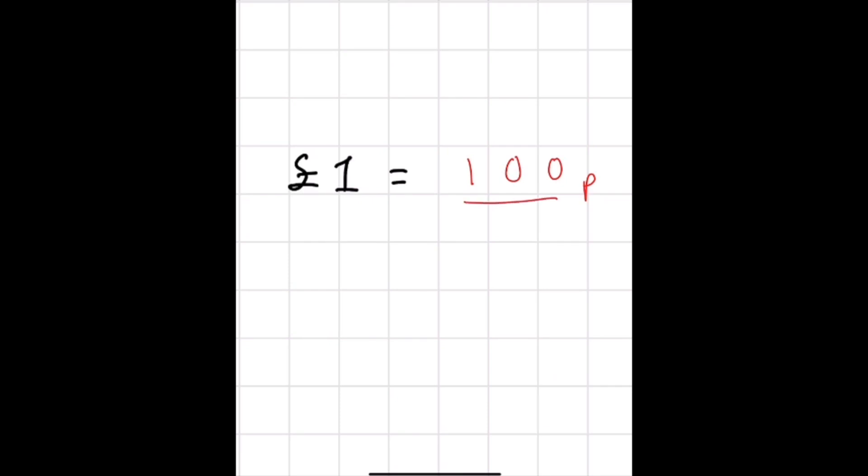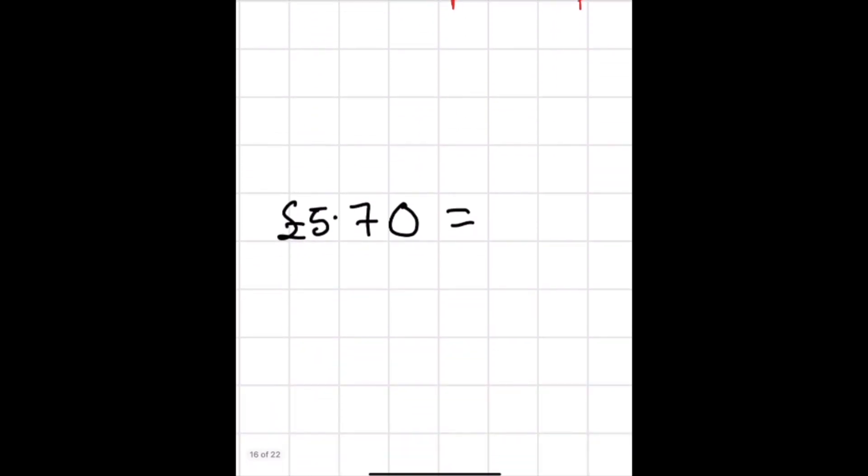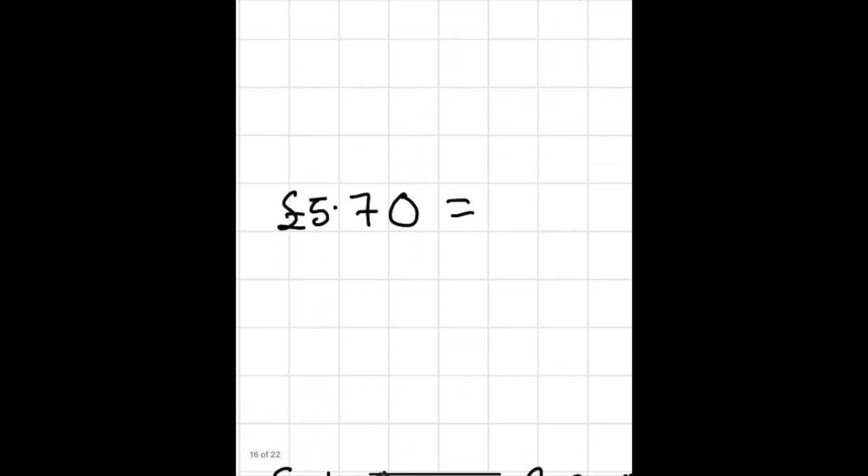We will also be able to partition pounds into different amounts so we know that inside 100p is 70p and 30p and that would be seven tenths of our pound.